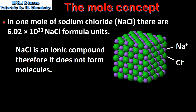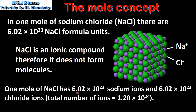In our last example, we look at an ionic compound. In one mole of sodium chloride, which is NaCl, there are 6.02 times 10 to the power of 23 sodium chloride formula units. Sodium chloride is an ionic compound, therefore it does not form molecules. Here we can see the lattice structure of sodium chloride, which is composed of positive sodium ions and negative chloride ions. Therefore, one mole of sodium chloride has 6.02 times 10 to the power of 23 sodium ions and 6.02 times 10 to the power of 23 chloride ions, giving a total of 1.20 times 10 to the power of 24 ions.